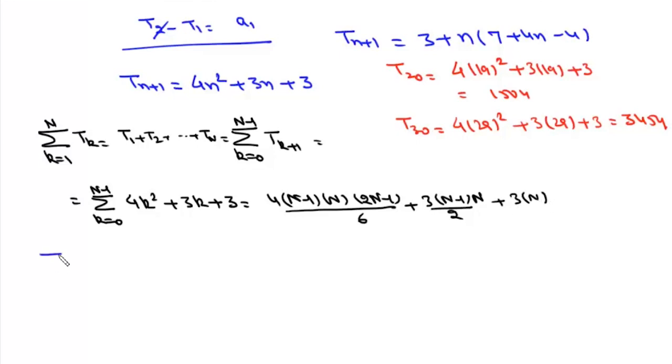Now first we will find summation from k=1 to 20 of Tₖ. Here the value of n is 20, so if we put n = 20...